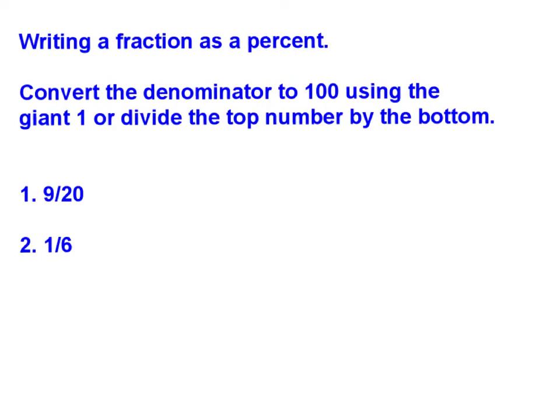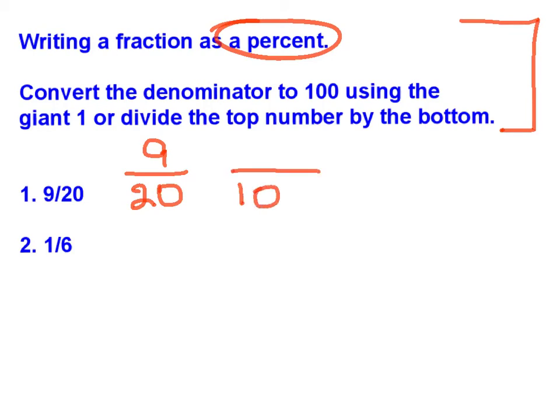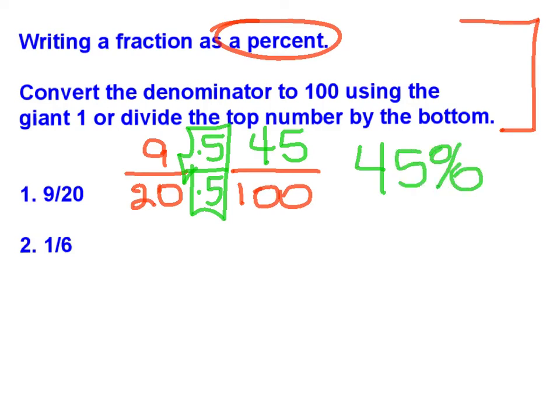Let's look at the last section of this lesson. Today we're going to be writing a fraction as a percent. There's two ways to do this. Convert the denominator to a hundred, or divide the top number, the numerator, by the bottom, which is the denominator. Pause the movie, and write these notes onto your paper. When you're finished, push play. Let's look at number one, nine-twentieths. I know that twenty can be multiplied by something to give me a hundred. Let's use our giant one. Twenty times five is a hundred. What I do to the bottom, I have to do to the top. Nine times five is forty-five. Forty-five out of a hundred is actually forty-five percent. Pause the movie, and copy example one into your notes.